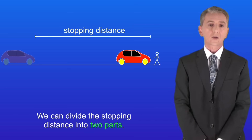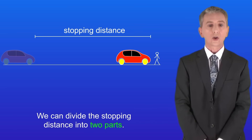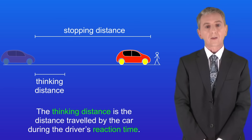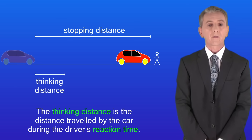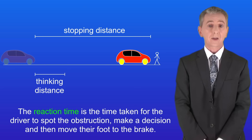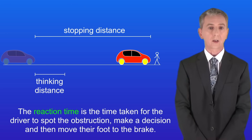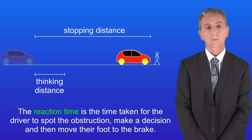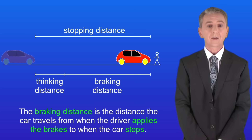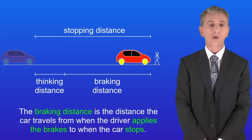We can divide the stopping distance into two parts. The thinking distance is the distance travelled by the car during the driver's reaction time. The reaction time is the time taken for the driver to spot the obstruction, make a decision and then move their foot to the brake. The braking distance is the distance the car travels from when the driver applies the brakes to when the car stops.